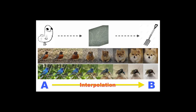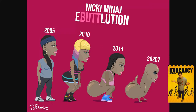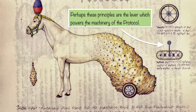If you were to average a dick butt with a pitchfork, somewhere in the middle you would get this guy — one of the Nazca lines in Peru. And then the temporal aspect: this is the overall agenda of the protocol — just the idea of a degradation over time into a couch potato or a slug of a useless, unthinking human being. So that's the long-term agenda in my opinion. And so perhaps these principles are the lever which powers the machinery of the protocol.